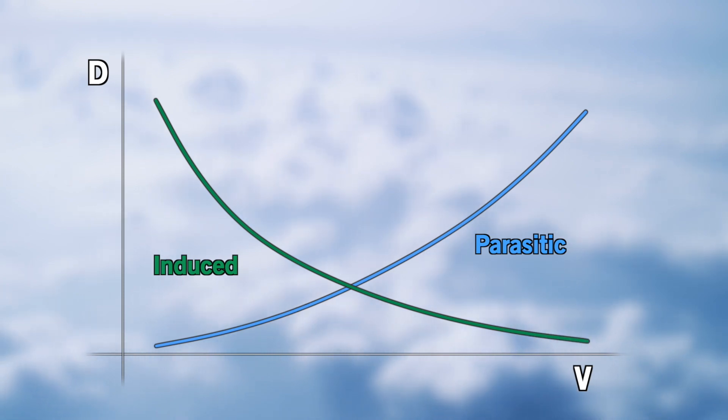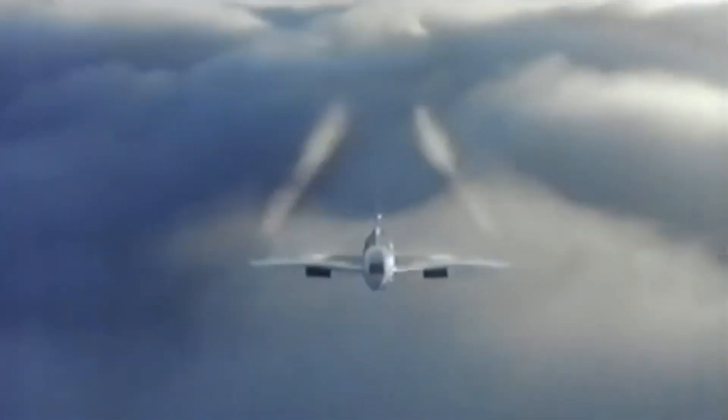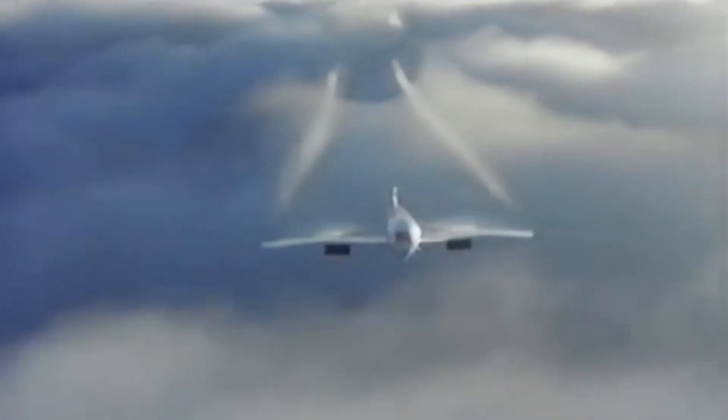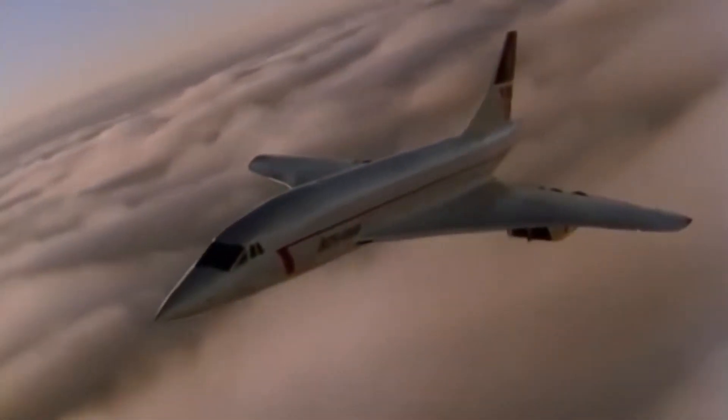As you can see, once an airplane reaches a certain speed, parasitic drag becomes predominant. However, as we get closer to the sound barrier, air begins to behave very differently.